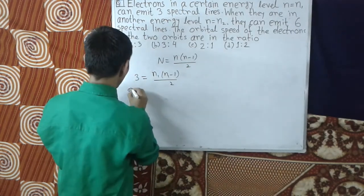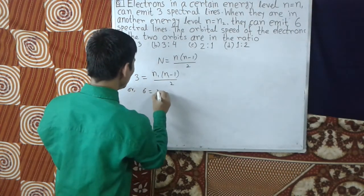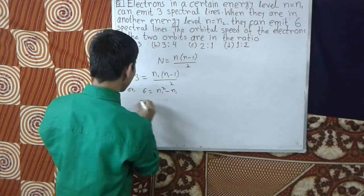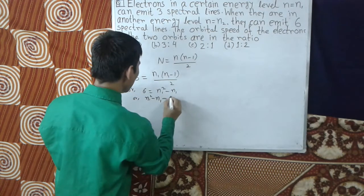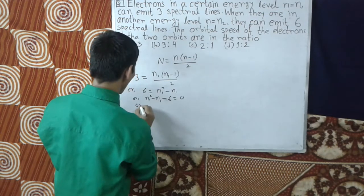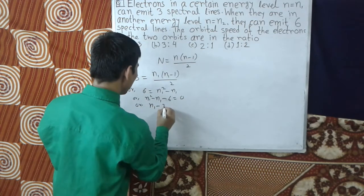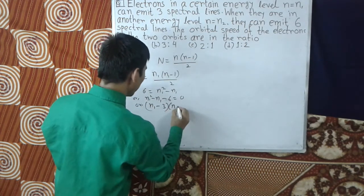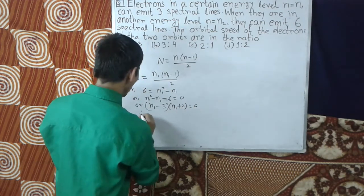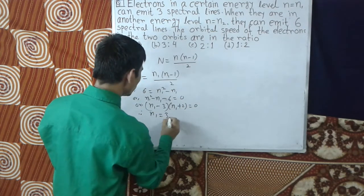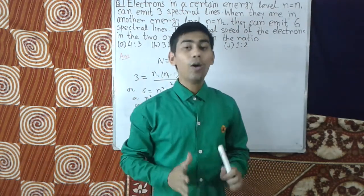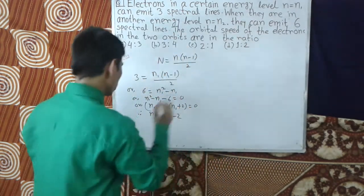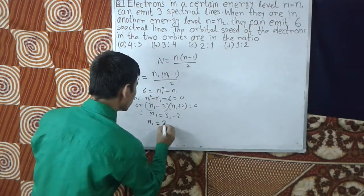Or n1² - n1 - 6 = 0, or (n1-3)(n1+2) = 0. Hence n1 = 3 or -2. We take positive root only, so n1 = 3.